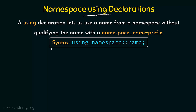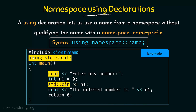The syntax is: using, then the namespace name, scope operator, and the identifier name. Looking at the same example program, we notice that here we just write cout without std:: in front. That is because we have declared at the beginning of the program: using std::cout. By doing this, I don't have to type std again before cout — the compiler already knows we are using the cout from the std namespace.